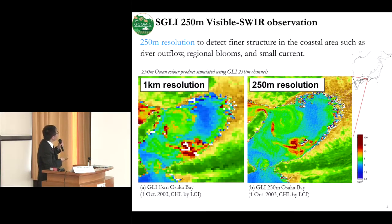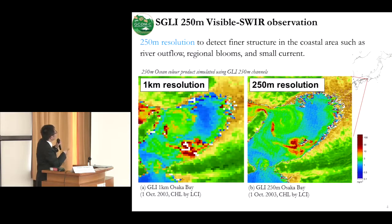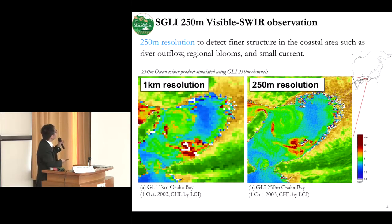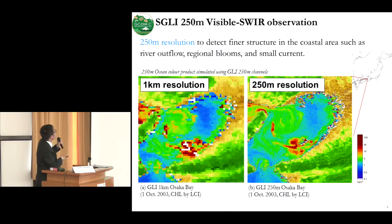This is an example of the resolution difference. This is a crow hill image in Osaka Bay, near Kyoto. This is a 1-kilometer resolution, and this is a 250-meter resolution. You can clearly see the crow hill pattern in the 250-meter resolution. So 250-meter resolution can detect finer structures in the coastal area, such as river outflow, regional blooms, and smoke currents.